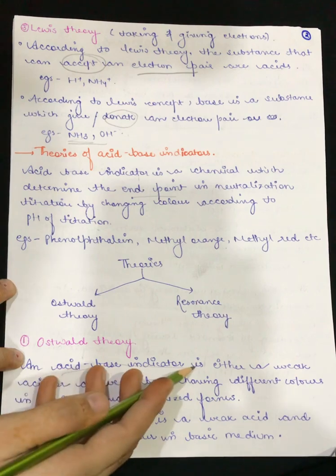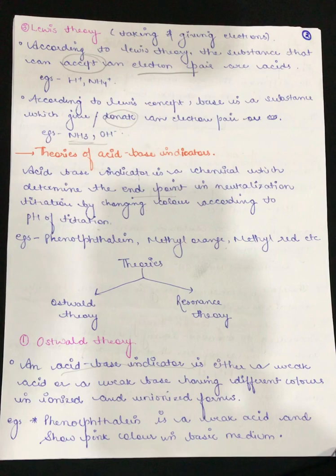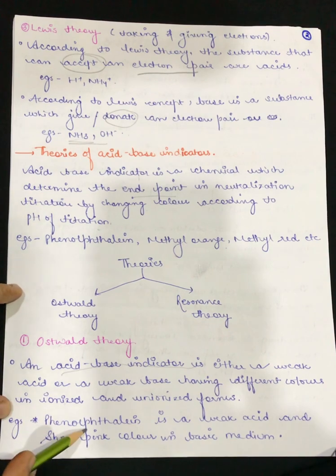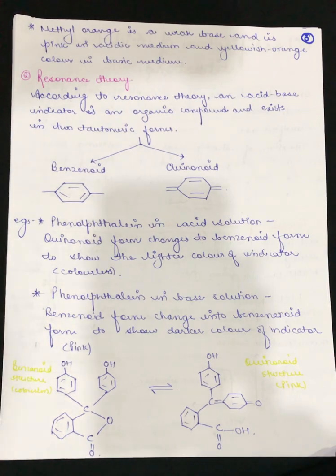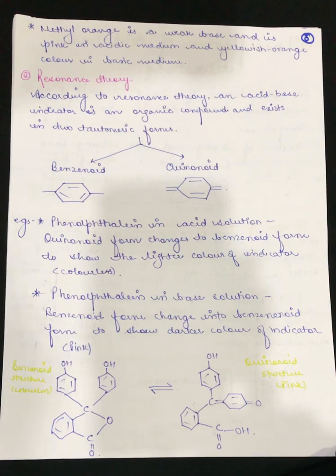According to Oswald theory, the indicator shows different colors in its ionized and unionized forms. For example, phenolphthalein is a weak acid, and when we introduce it in a basic medium, it will show us a pink color. Similarly, methyl orange is a weak base, and when we introduce it in an acidic medium, it will convert to a yellowish-orange color. This is the property described by Oswald theory.